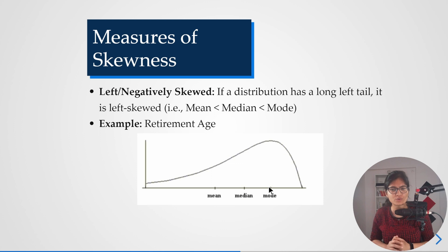Where this real life example will happen as a left skewed distribution? I have written one example called retirement age. Can you think of how I am saying that retirement age is a left skewed example?